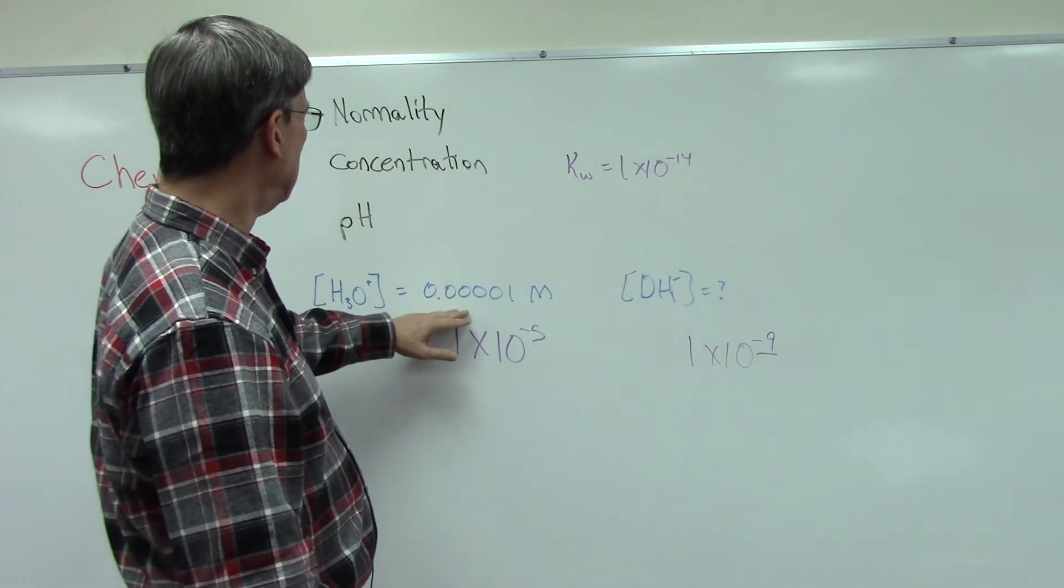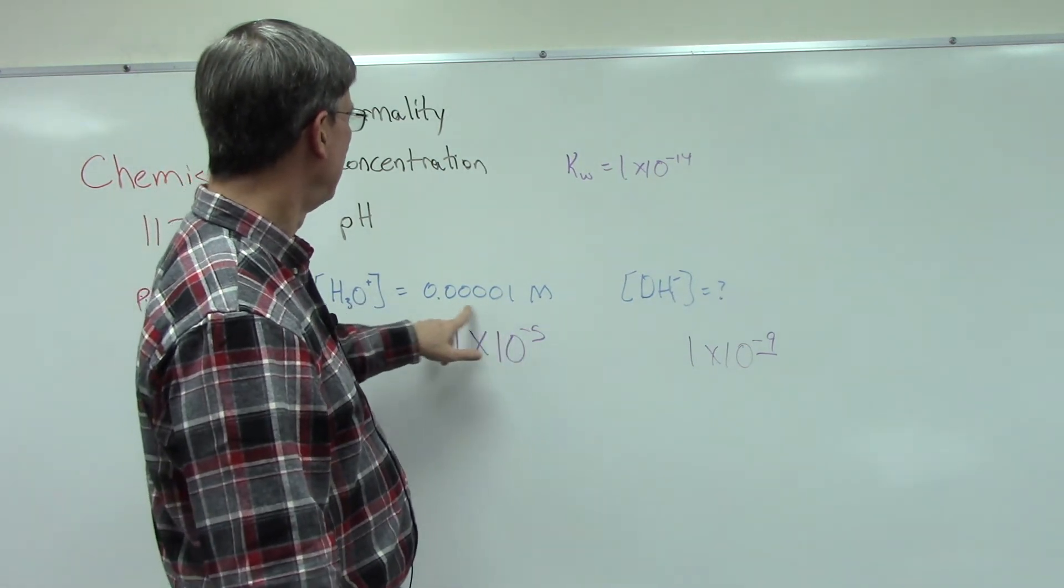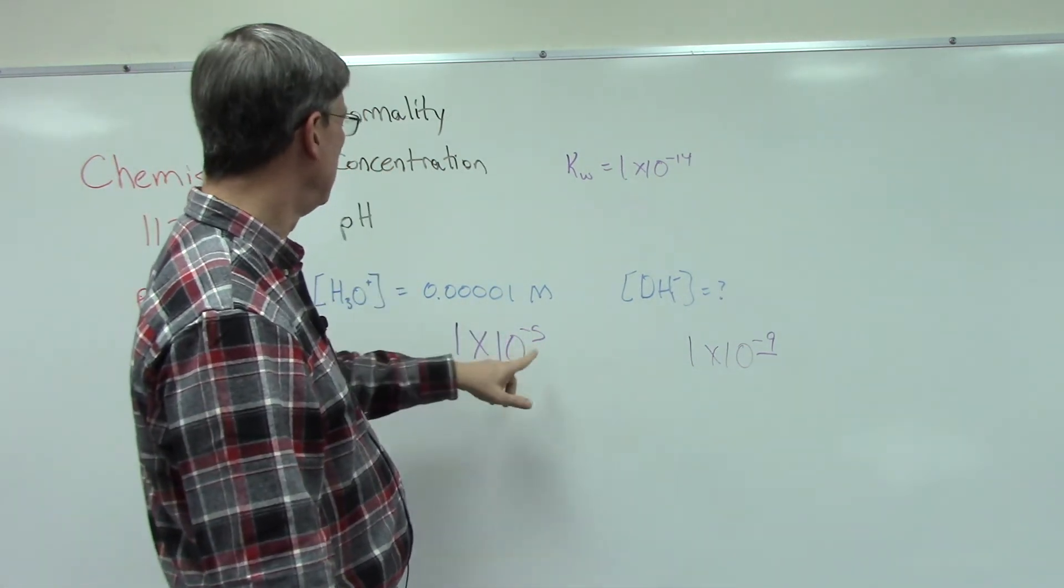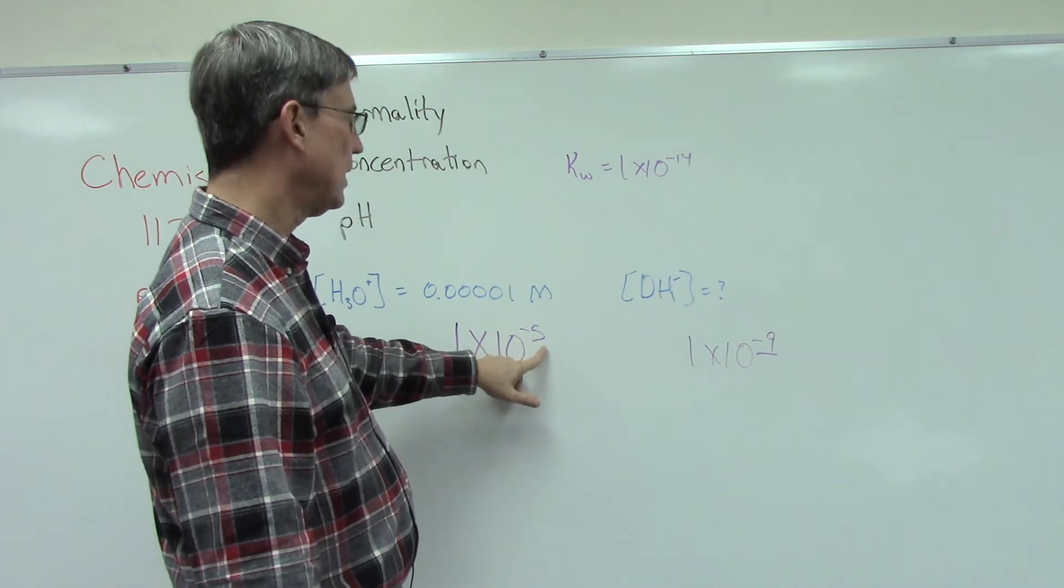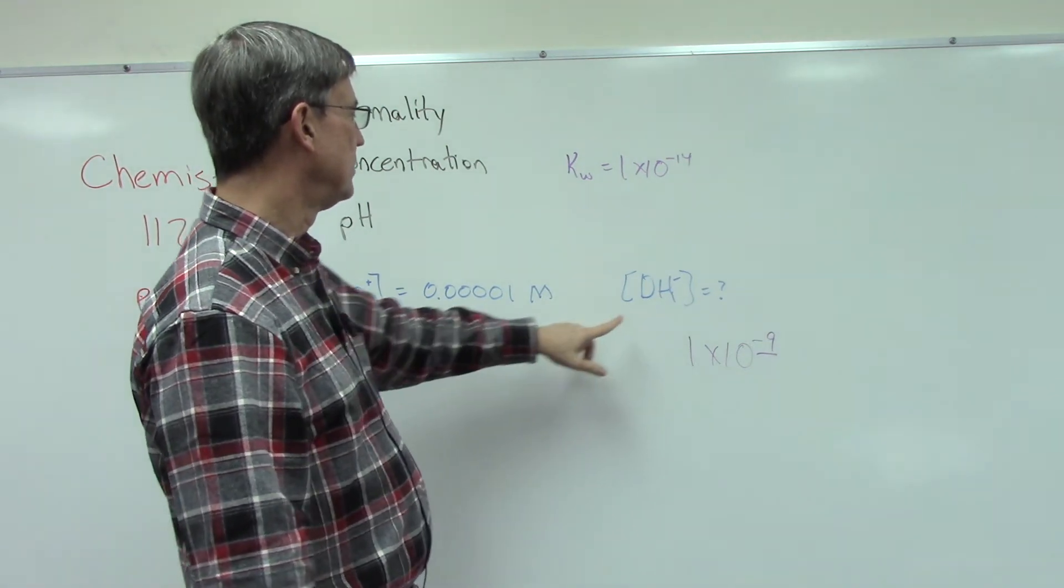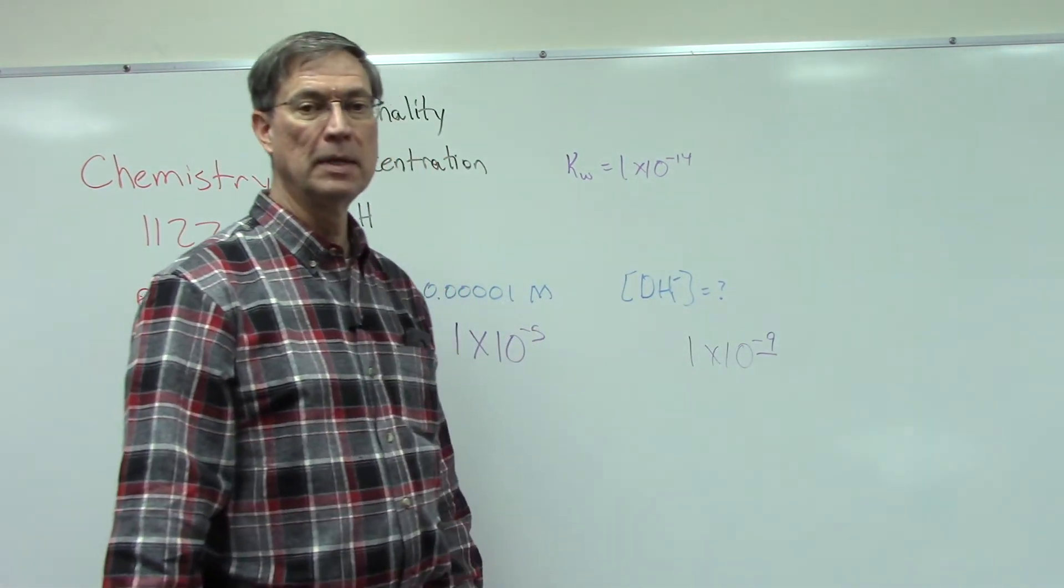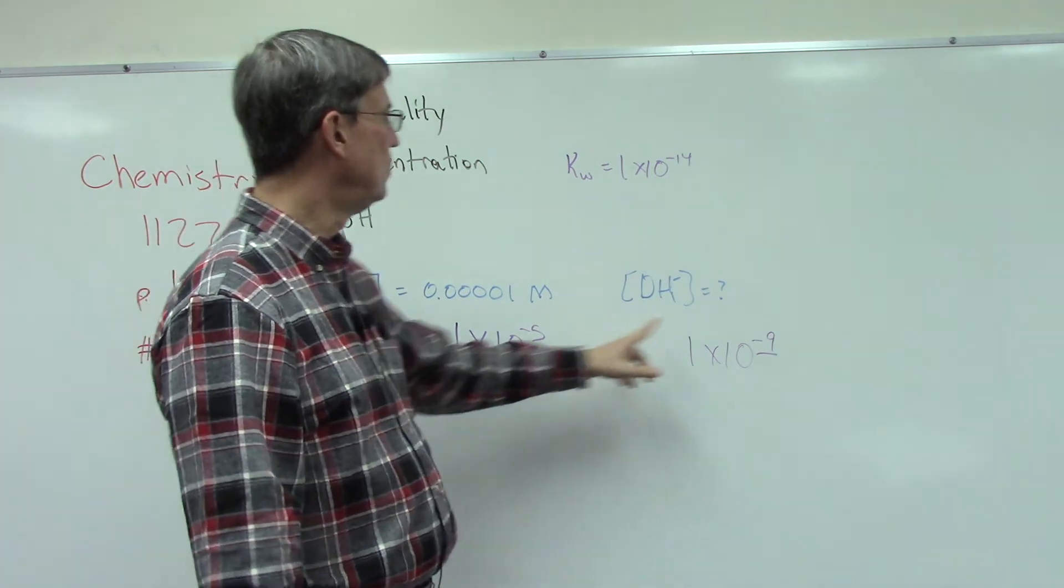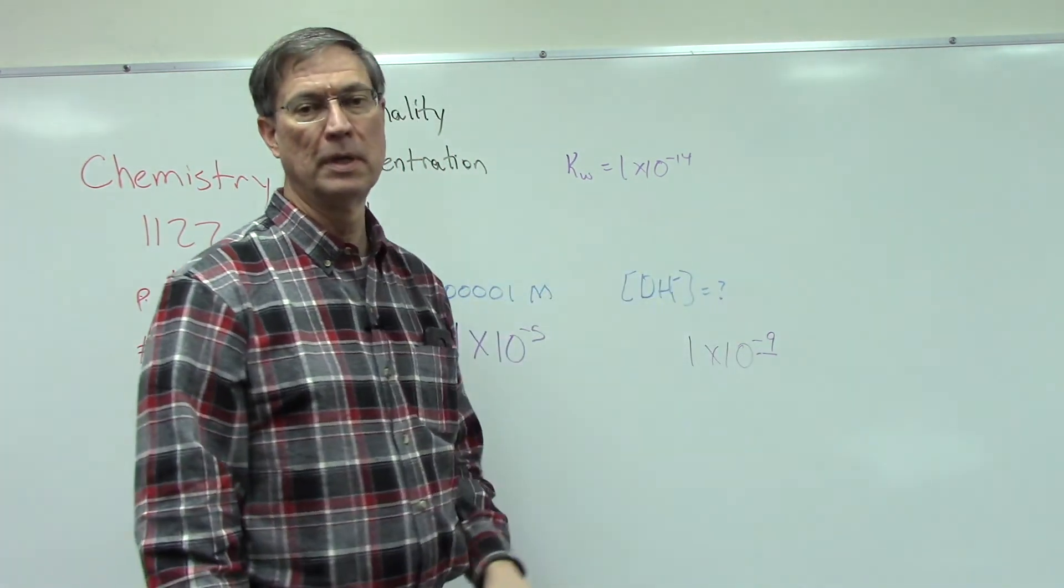If this had been, you know, if there had been another zero in here, then this would be negative 6, and then the concentration of the OH- would be negative 8 because these two have to always add up to negative 14.